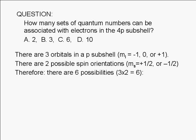Therefore, there are six possible sets of quantum numbers for an electron in a 4P subshell. The correct answer is six.